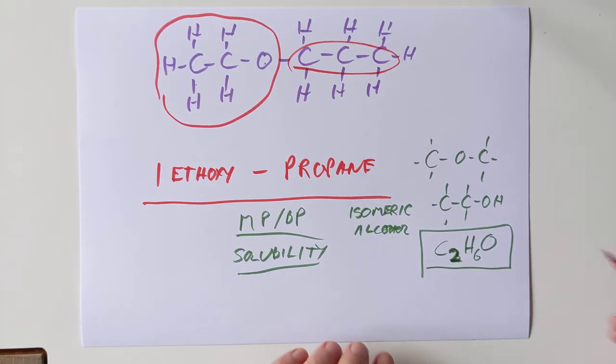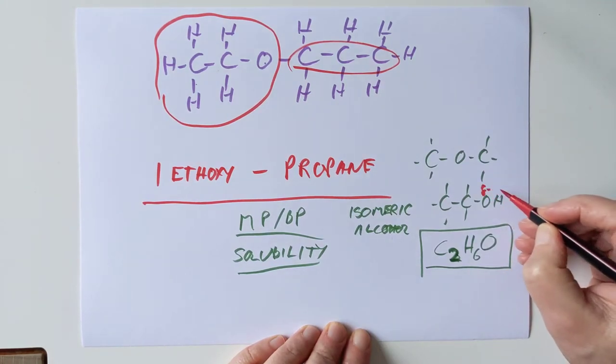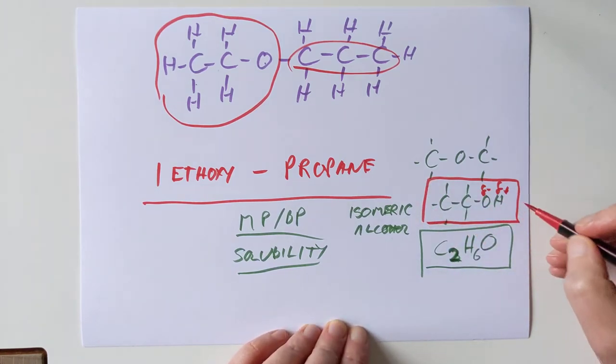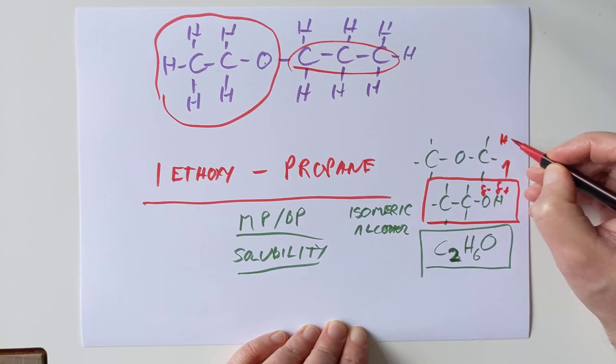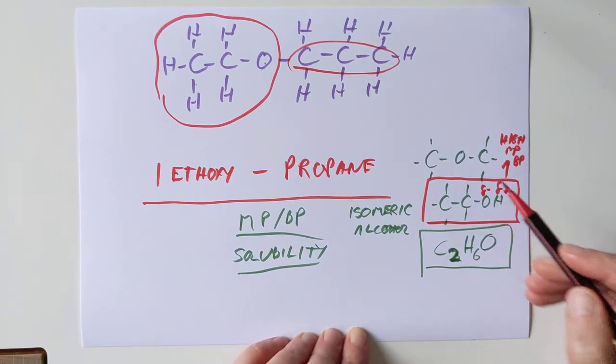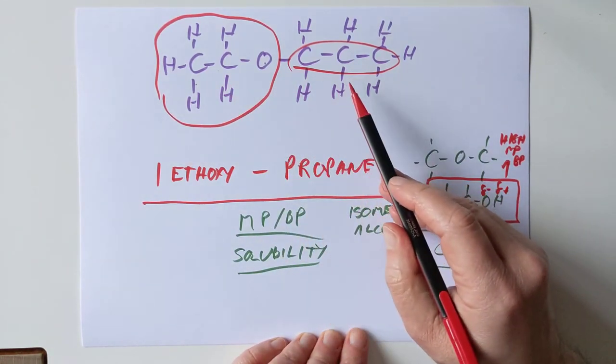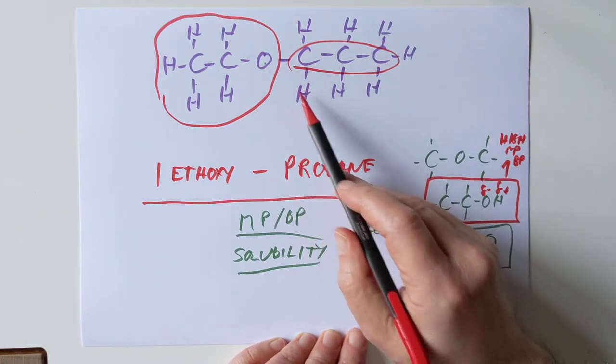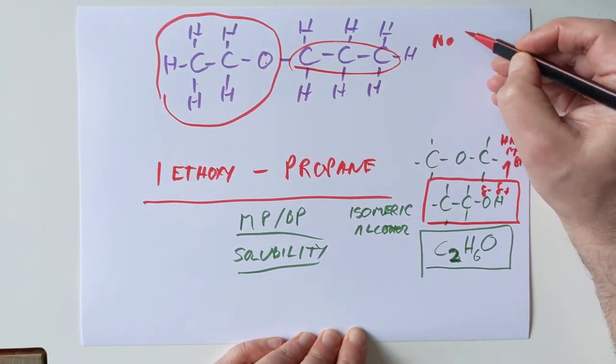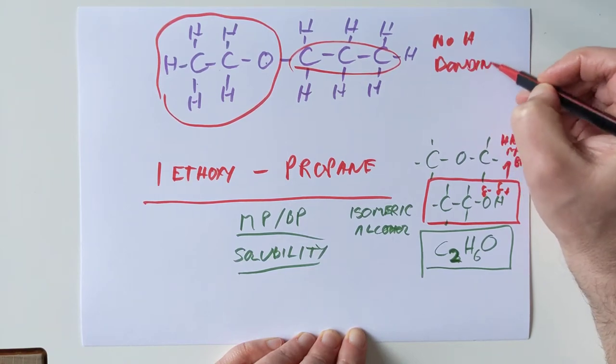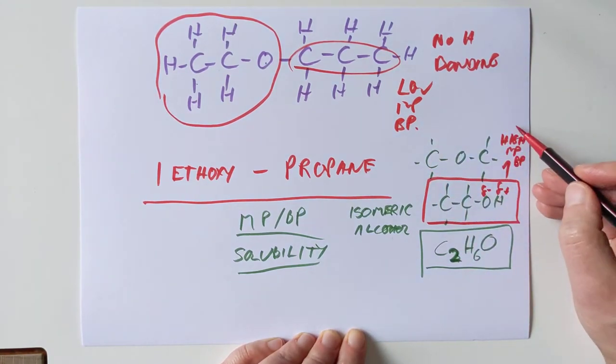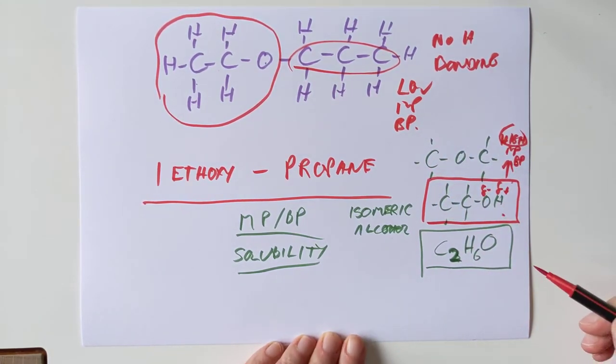Just like the amine family, we're going to haunt you with something from higher. Alcohols have hydrogen bonding between their molecules, and these have very high melting and boiling points. Whereas these guys here, they do not have any... they have oxygen and they have hydrogen, but they're not attached together. So you don't get that large delta in electronegativity. And these have no hydrogen bonding. So as a result, the melting and boiling points of ethers are low when compared to the isomeric alcohol.